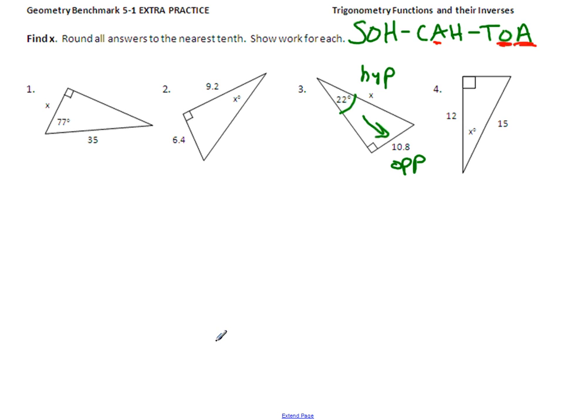I look up above. I see opposite and hypotenuse are in the sine. So that's how I know to use sine. So sine of an angle, the angle is 22, equals opposite over the hypotenuse.